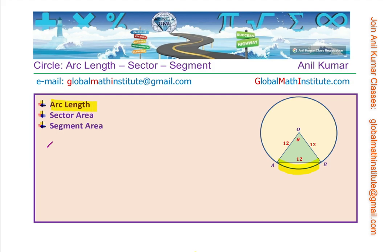We need to find the arc length as highlighted A to B. To find the arc length A to B, first step will be to find the angle. Now here you see it's an equilateral triangle.